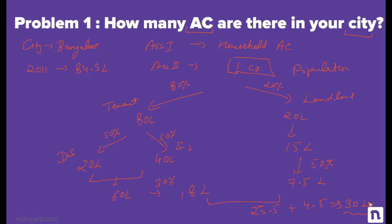This is the final answer, though the actual number might be 40 lakhs or 20 lakhs. But the interviewer is looking at the approach and how well you justified the numbers. For example, 30% of tenants have AC while 50% of landlords do — which is quite justifiable, since landlords stay longer and are in a better position to invest in AC, while tenants won't prefer to invest. This is how you should structure and approach a guesstimate.